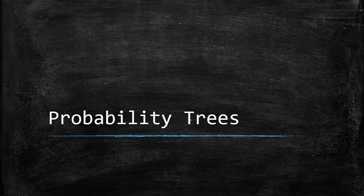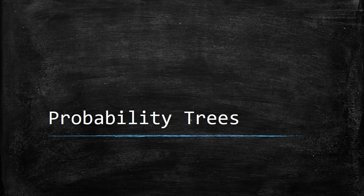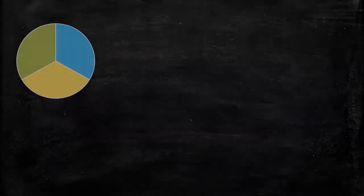Here we're going to take a look at how we can use what's called a probability tree to find the probability of a certain event and a number of outcomes. So we're just going to jump in with an example here.